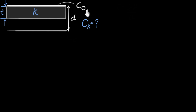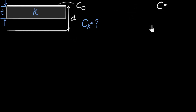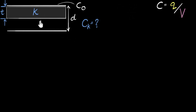I want to go back to the most basic formula — the general definition of capacitance. Capacitance C is defined as the charge on one of its plates, Q, divided by the voltage across its plates, V. I like to use this because it works regardless of the geometry of your capacitor and regardless of what medium you've put inside. This is the general definition, so this should work.